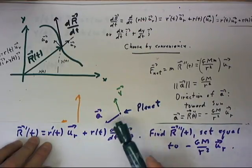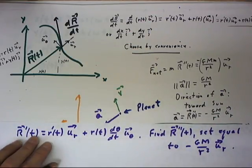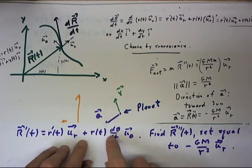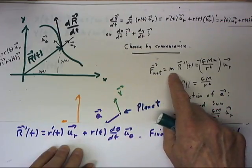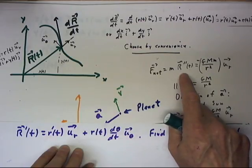We've seen that for a planet moving in the vicinity of the Sun, within the gravitational field of the Sun, that the net force is the mass times the second derivative of the position function.